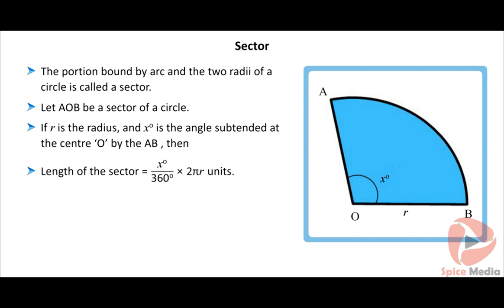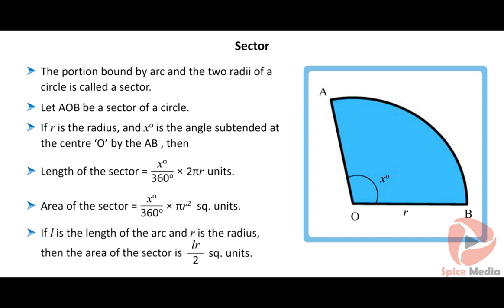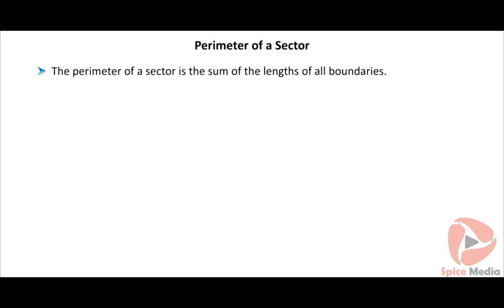The area of the sector is equal to (x/360) × πR² square units. If L is the length of the arc and R is the radius, then the area of the sector is LR/2 square units.